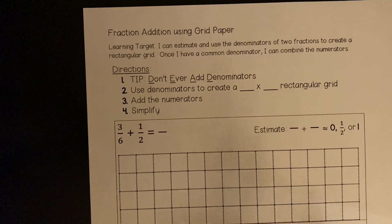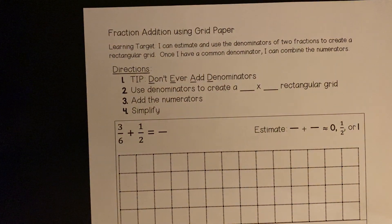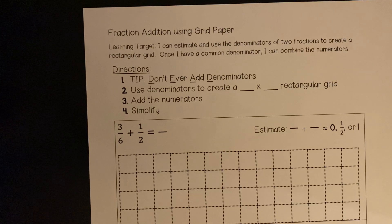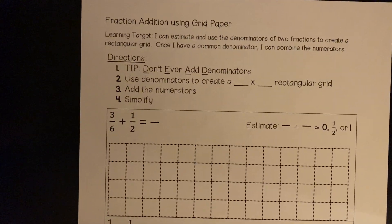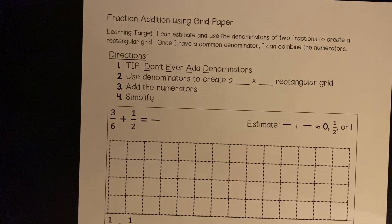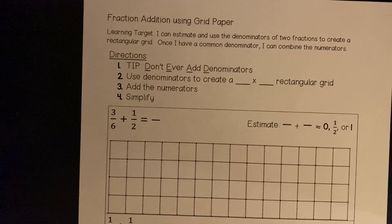Learning target: I can estimate and use the denominators of two fractions to create a rectangular grid. Once I have a common denominator, I can combine the numerators. Directions. Number one, tip: don't ever add denominators. Two, use denominators to create a blank by blank rectangular grid. Three, add the numerators. Four, simplify.